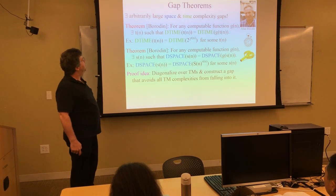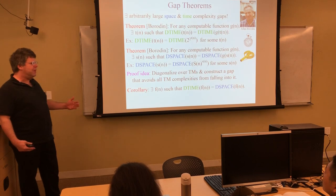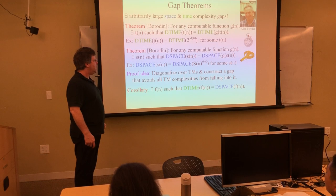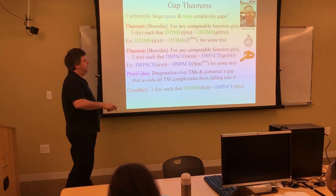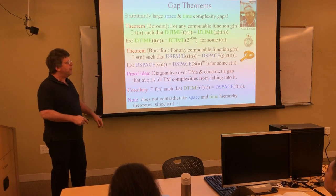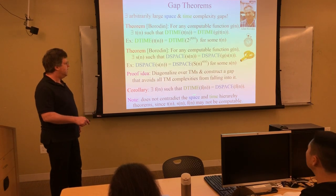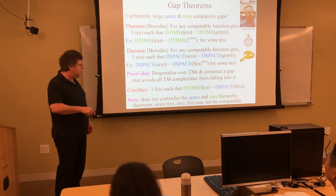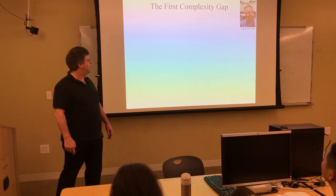That's how you prove these gap theorems. Even the statement of that theorem is hard to wrap your mind around. For example, there exist functions such that deterministic time f equals deterministic space f — but f here is a very esoteric, non-computable function. This does not contradict the space and time hierarchies because these bounds T, S, and F are not necessarily computable.